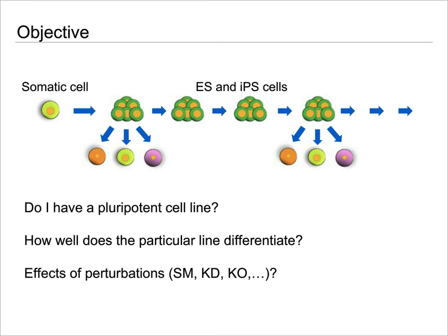This brings me back to asking the particular question: do I even have a pluripotent cell line? But then, more specifically, we and many others are interested in how well a particular line differentiates, and as I just showed in the last example, what are the effects of perturbations — whether these are small molecules, knockdowns, or knockouts?